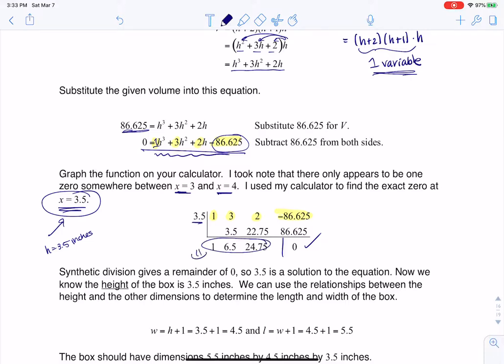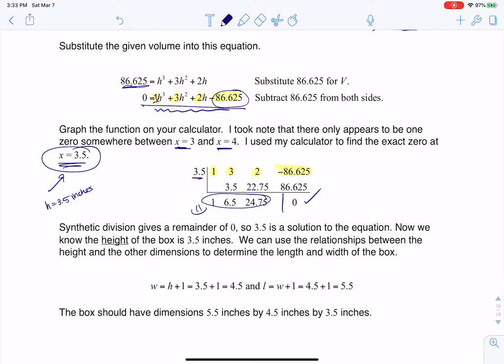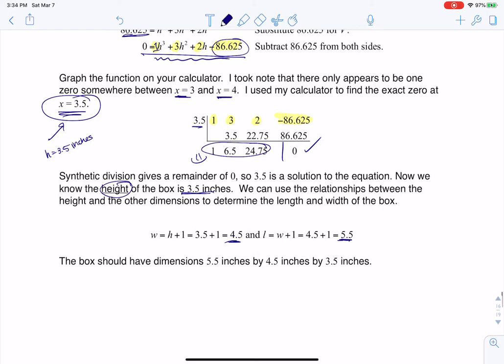They're nice, but it doesn't matter. So at this point, I know that the height of the box is 3.5 inches. And if the width is 1 inch more than the height, that would make the width 4.5 inches. And then the length is 1 inch longer than the width, so that would make that 5.5 inches. So there's my length, my width, and my height for my box that has a volume of 86.625 cubic inches. All right, thanks so much everyone, bye.